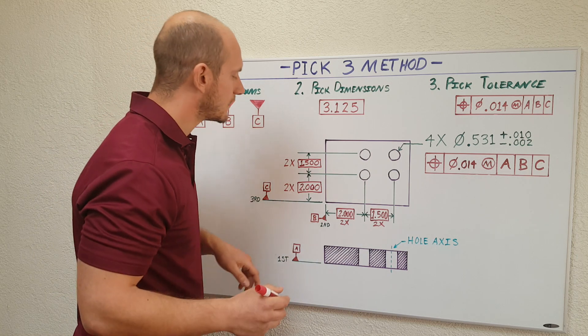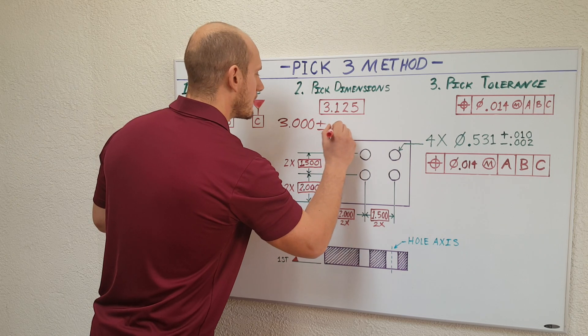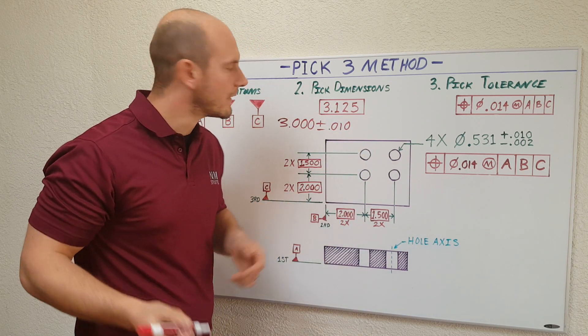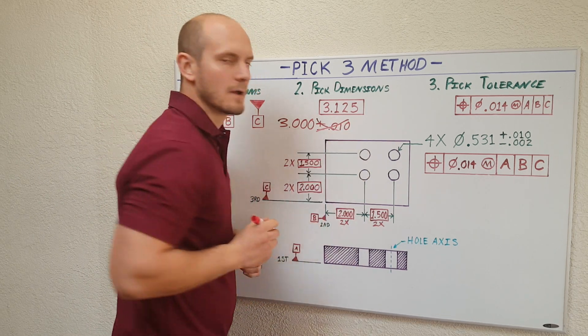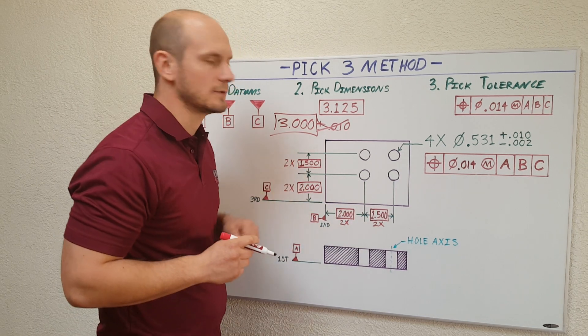Now, typically on drawings, we're used to seeing plus or minus dimensions like this for each distance dimension. However, with GD&T, drop the plus or minus off. Then box your dimension. Make sure you do that for each distance dimension.